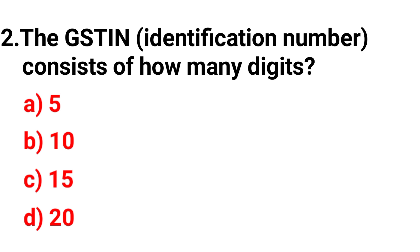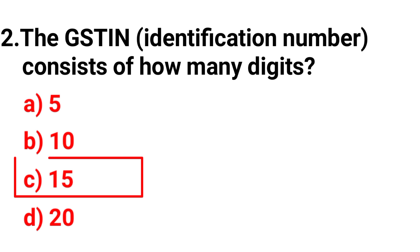Question number 2. The GSTIN identification number consists of how many digits? Option A: 5. Option B: 10. Option C: 15. Option D: 20. The correct answer is Option C, 15.